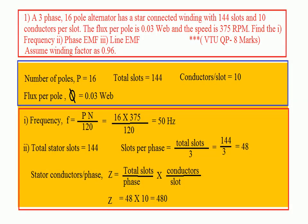One more type of problem — now you can enjoy. The total number of slots are available and the problem is directly asked in one of the question papers for 8 marks. A 3-phase 16-pole alternator has a star-connected winding with 144 slots and 10 conductors per slot. The flux per pole is 0.03 webers and speed is 375 RPM. Find: (1) frequency, (2) phase EMF, (3) line EMF. Assume winding factor as 0.96.